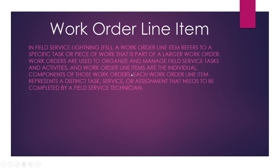Now let's jump to the next topic: work order line items. We already discussed work orders — a work order is any work or task. For example, I have one task called router fitting or internet fitting. To fit the router, we have small sub-tasks: first, make the cable connection; second, fit the router; third, do some additional fitting. For one particular work order, we have these small sub-tasks, and those small parts of a task are known as work order line items.